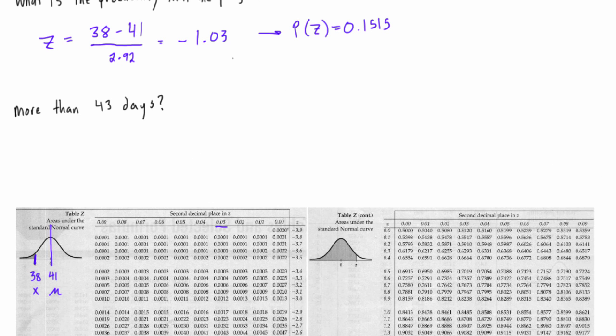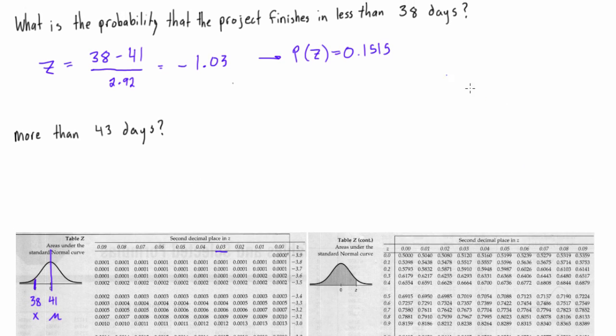So the original question was, what is the probability that the project finishes in less than 38 days? Well, that's this probability. Anything, this could be 37, 36, it just trails off, basically down to nothing. So the probability that we finish in less than 38 days, we're going to get a probability of 15.15%.